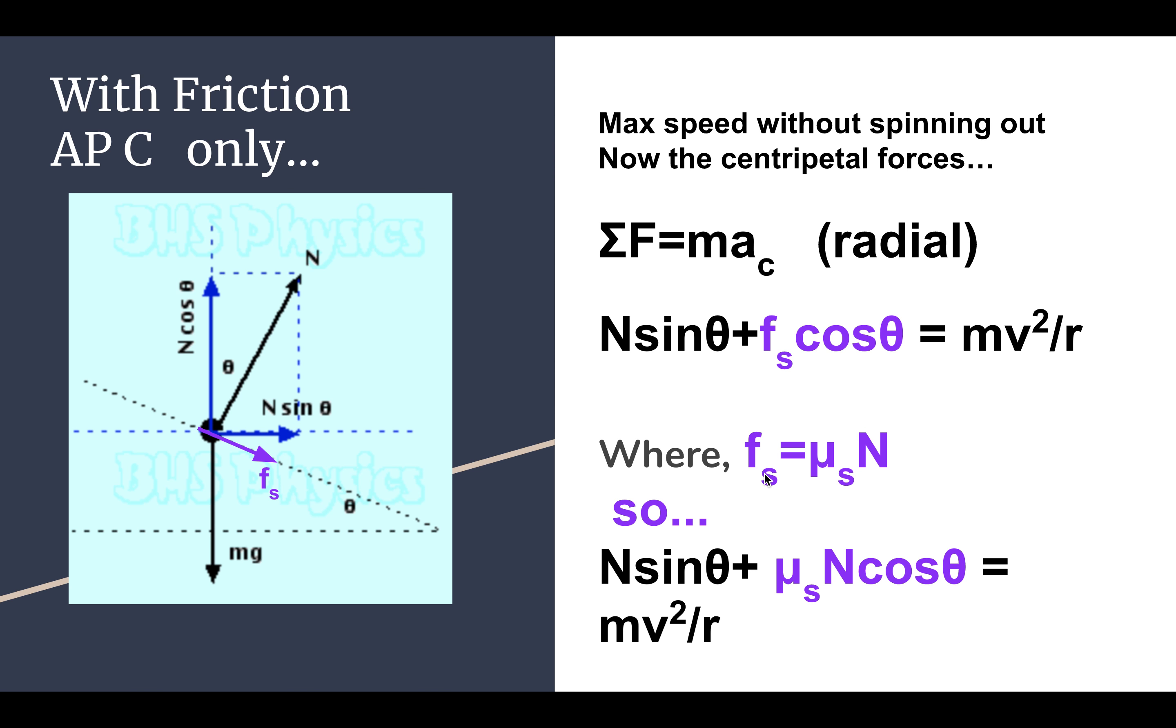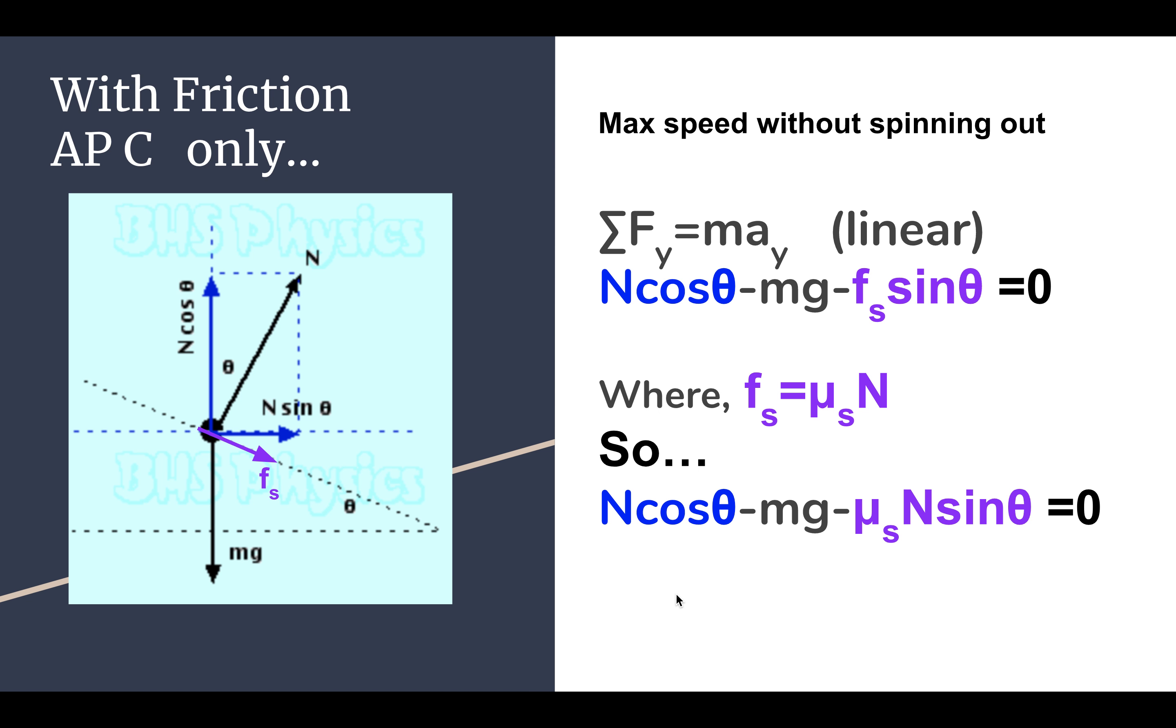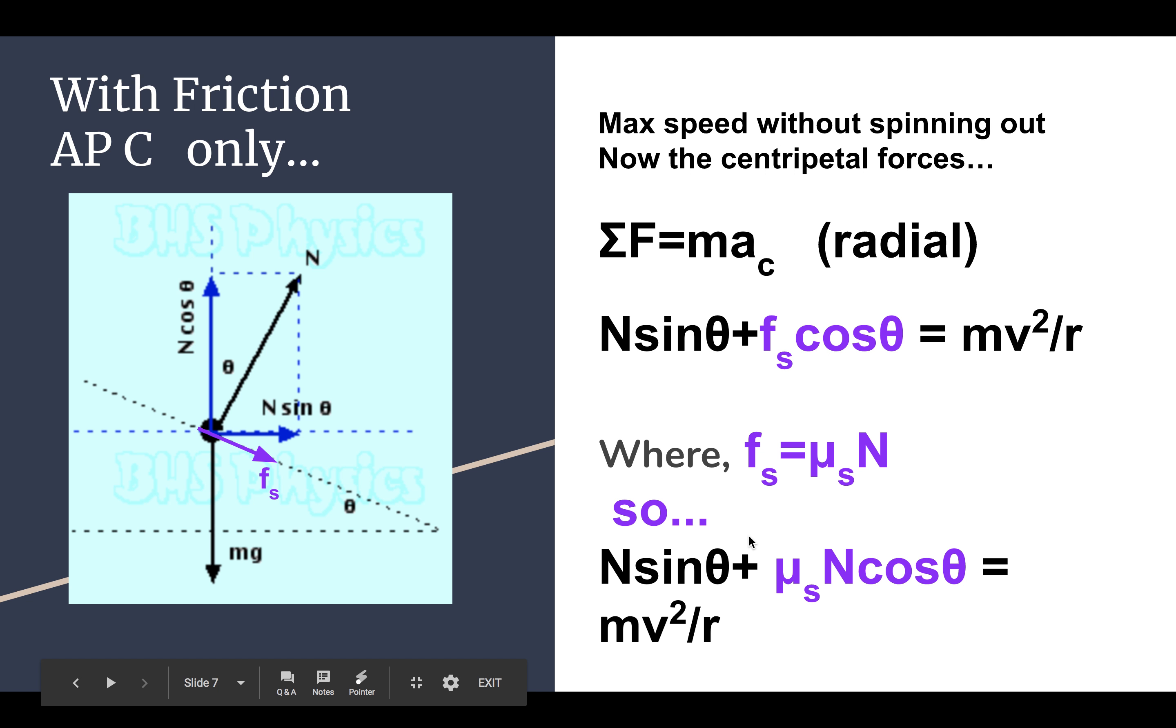So again, same idea, our static friction is going to be μs times the normal force. So plugging this piece in for that, we have an expression for the normal force equal to mv²/r. So between this equation here and the one from the previous page here, you have two equations, typically two unknowns that you can solve for a system of equations. So that's the only complication adding friction to the banked curves.